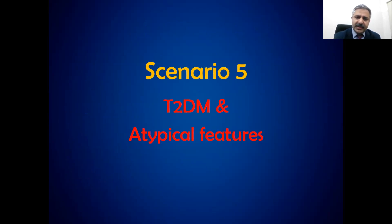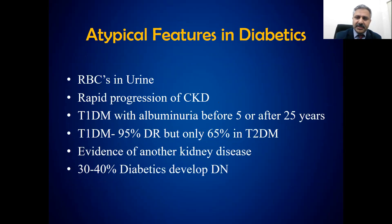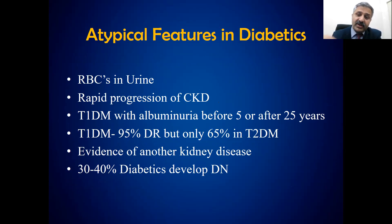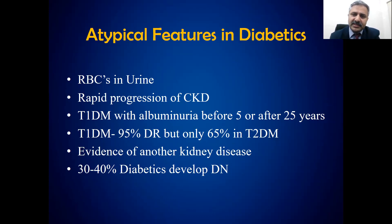Situation five: a type 2 diabetic with atypical features not typical of diabetic nephropathy — for example, hematuria or rapid progression. Normally GFR falls slowly, but rapid progression may indicate a superimposed glomerular disease. In type 1 diabetes, albuminuria appearing before 5 years or after 25 years is a red flag for something else. Most type 1 diabetics have diabetic retinopathy preceding nephropathy, so absence of retinopathy is a red flag. Evidence of another kidney disease — such as hep C-related MPGN or biopsy-proven disease — indicates you may need a kidney biopsy. Not all patients with diabetes will develop diabetic nephropathy — only about 40% will, and genetic and family history is the most important factor.